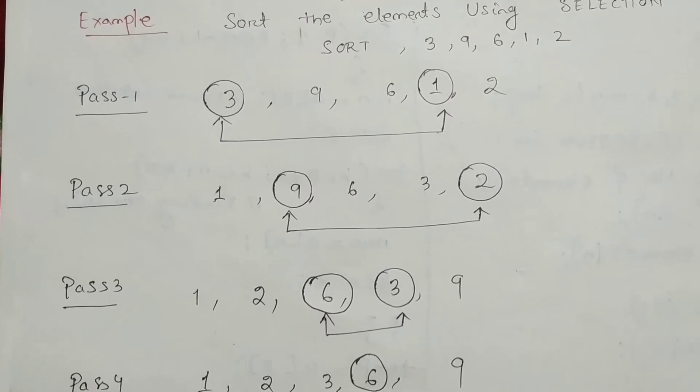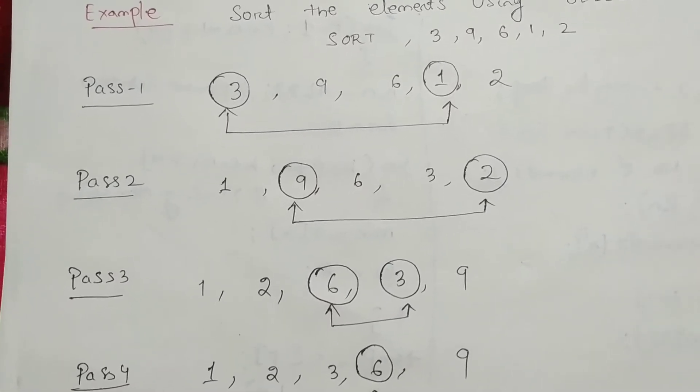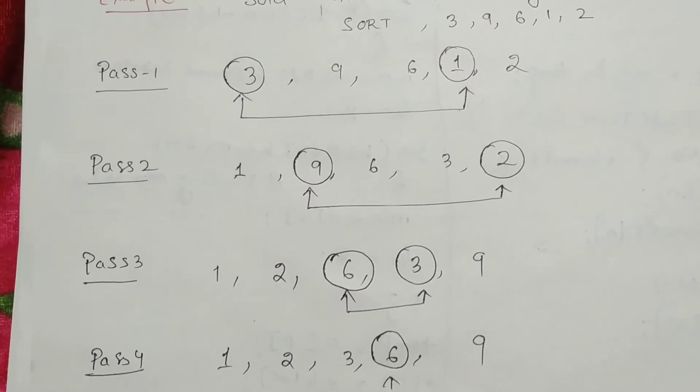Again, in the list, which one is the next lowest element? That is 2. So 2 will come to its proper position. It comes to 9's place.